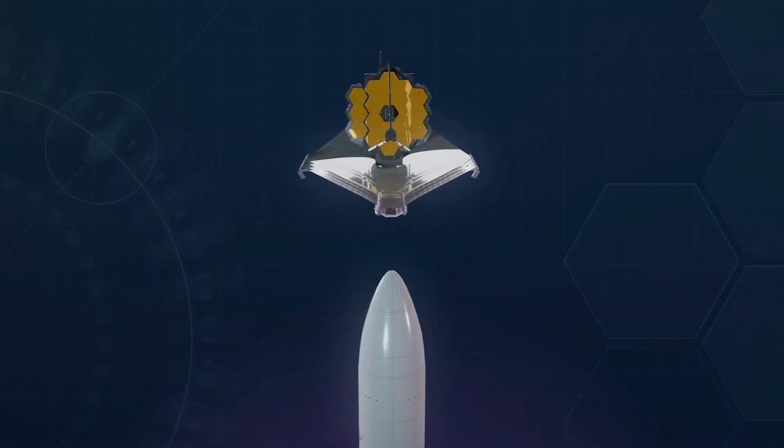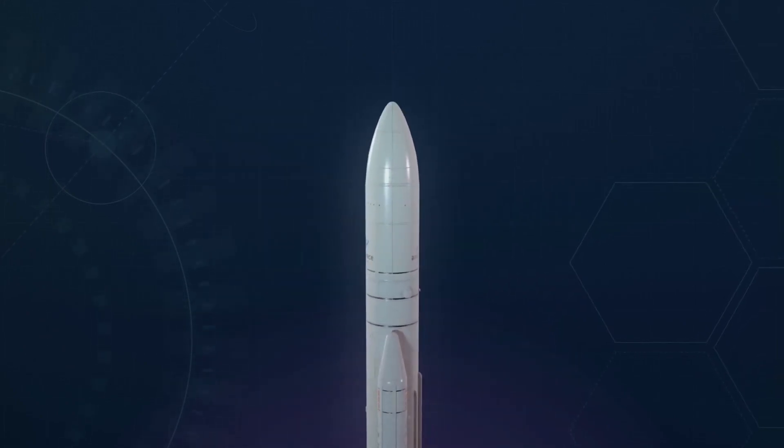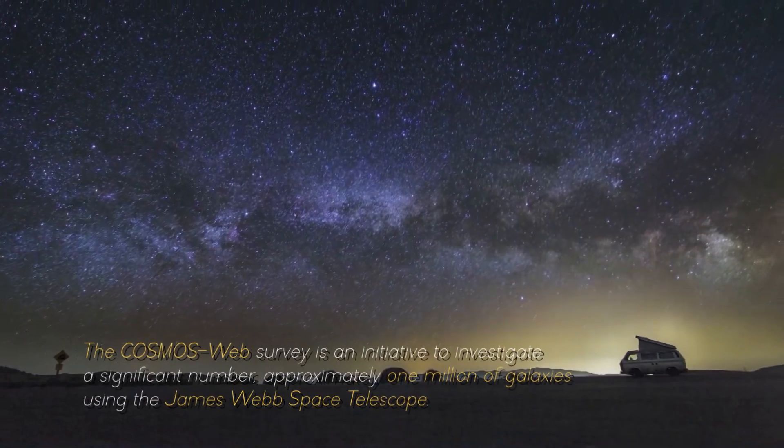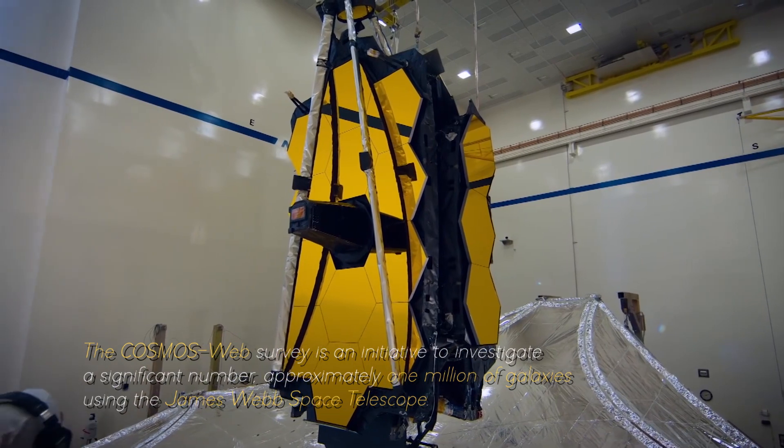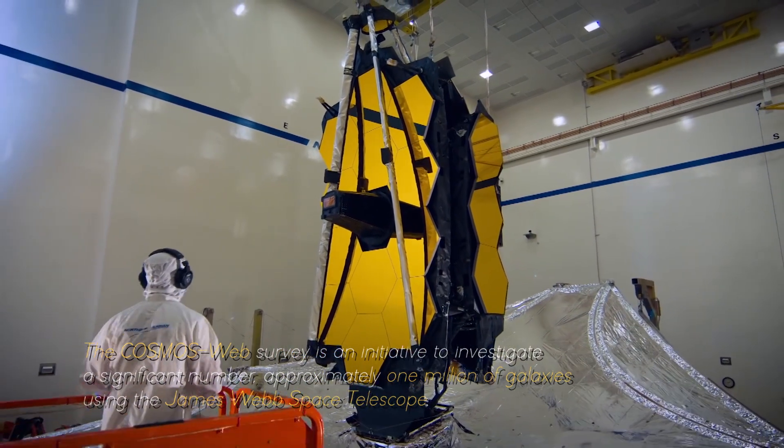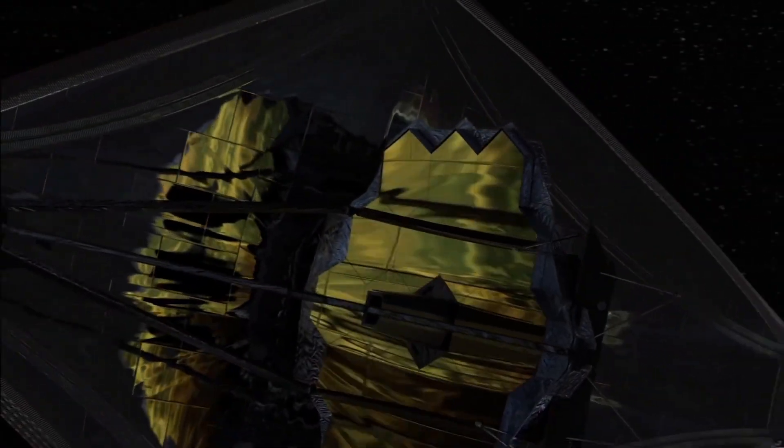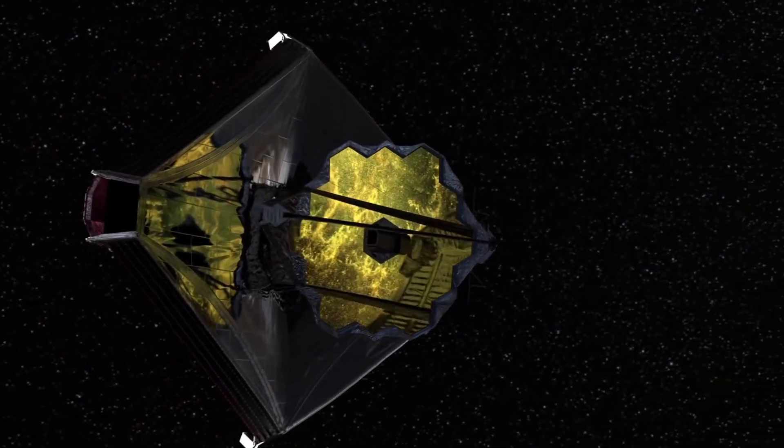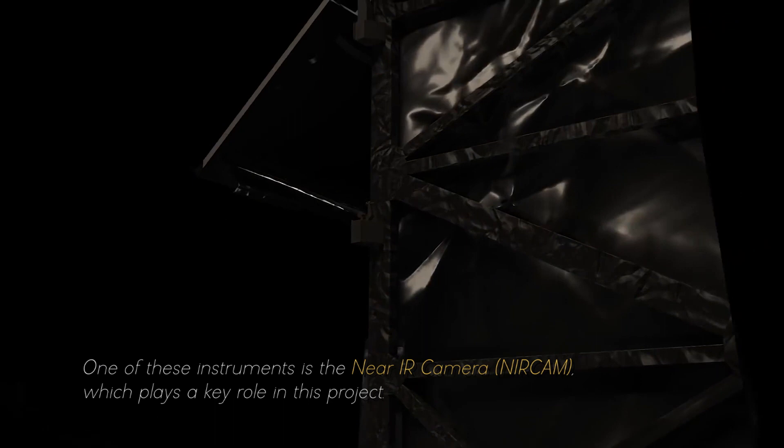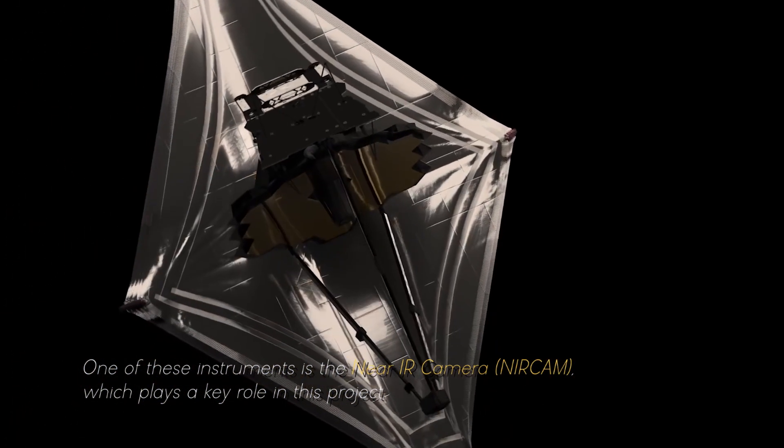What is the Cosmos Web Survey project, and how is the James Webb Space Telescope involved? The Cosmos Web Survey is an initiative to investigate approximately one million galaxies using the James Webb Space Telescope. This telescope has four scientific instruments that make it possible to observe the infrared light of the universe with unprecedented resolution and sensitivity. One of these instruments is the Near-Infrared Camera, NIRCam, which plays a key role in this project.